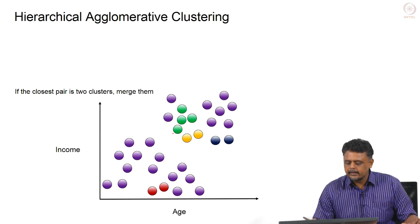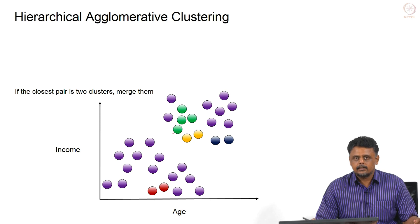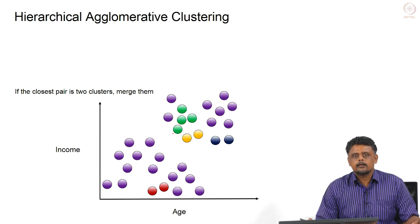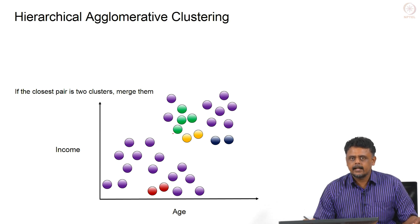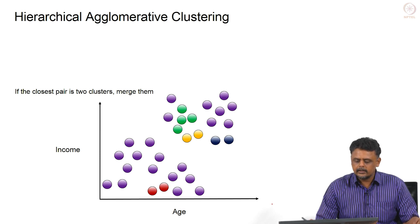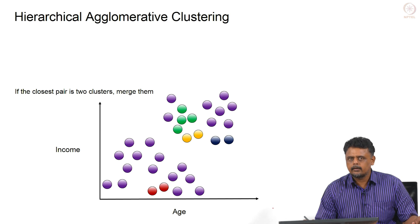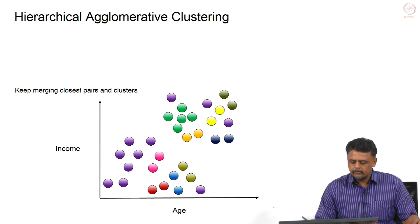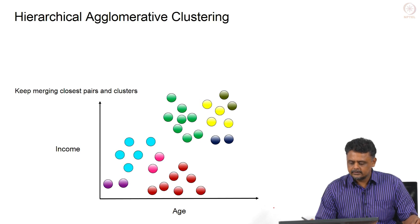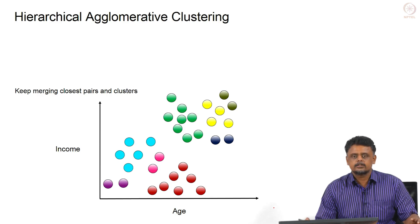We will see how to determine the distance between two clusters when they contain multiple data points — that is where the linkage comes in. For now, let us assume we can figure out a way to find which two clusters are the least dissimilar based on some Euclidean metric and merge them. We keep merging closest pairs of data points as well as clusters, so the number of clusters will begin to reduce.